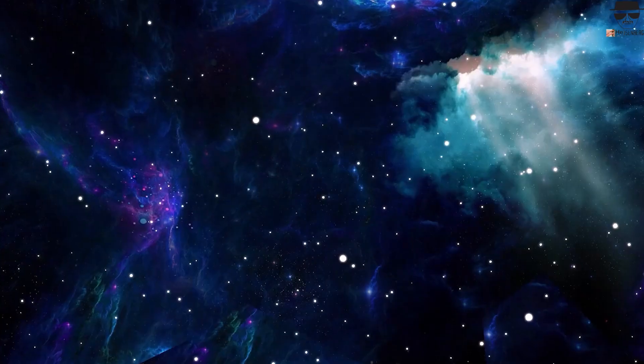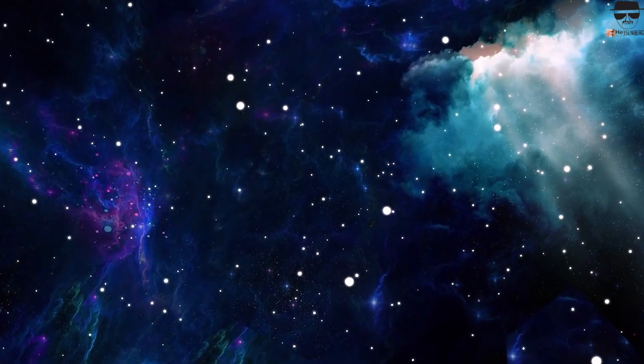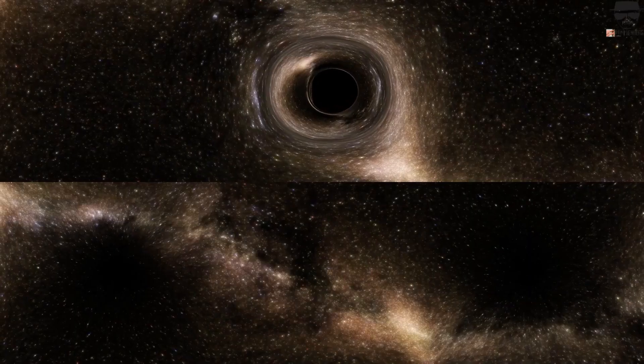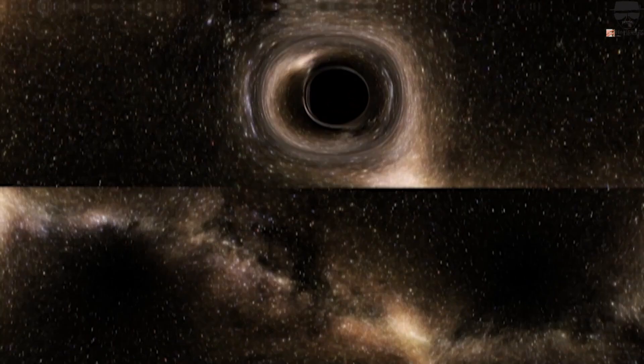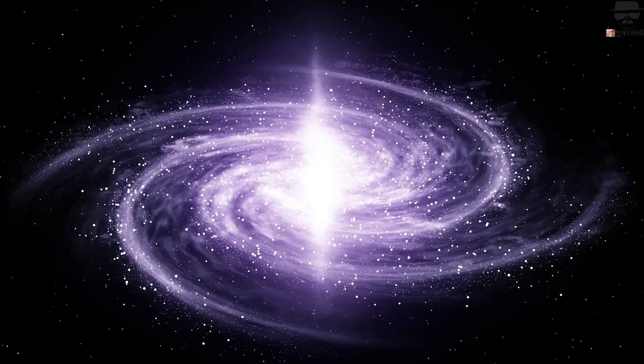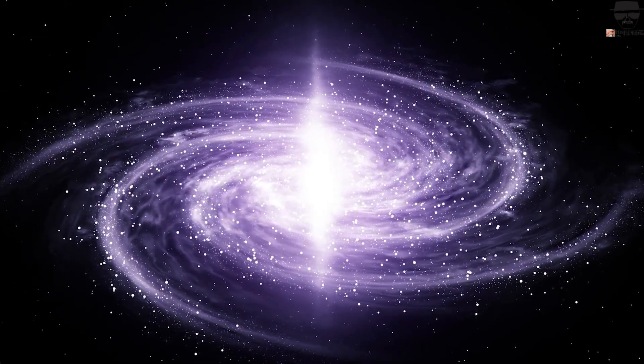Stephen Hawking theorized in 1971 that black holes emerged in the chaotic environment of the Big Bang's early moments. He described how pockets of matter may achieve the densities required to form black holes on their own.